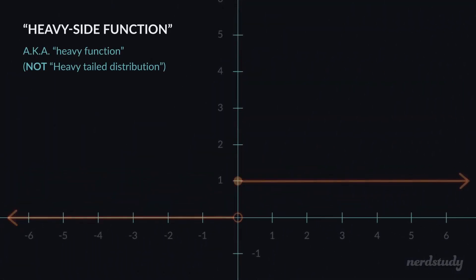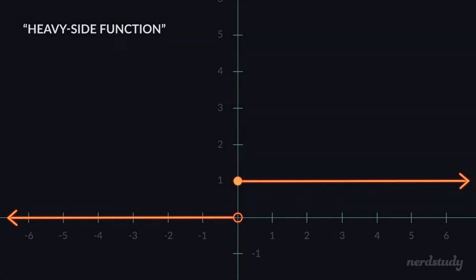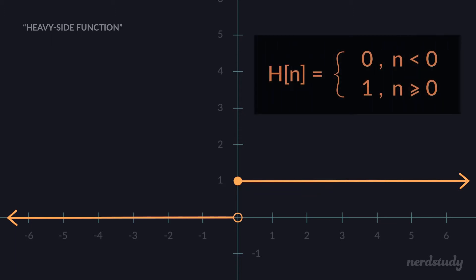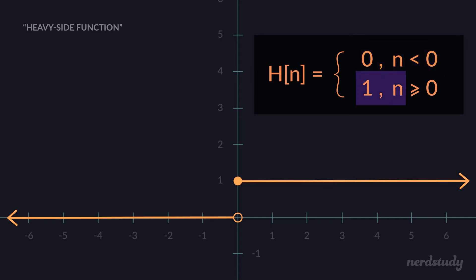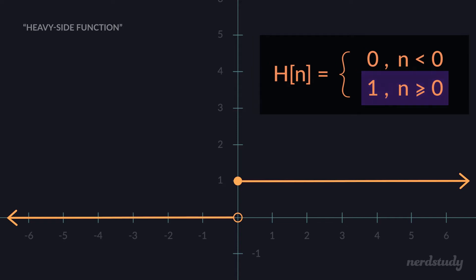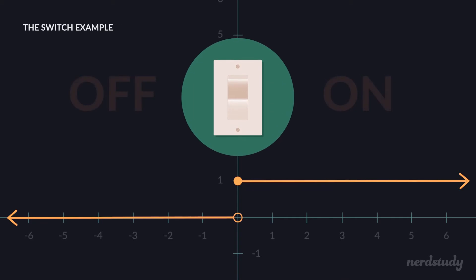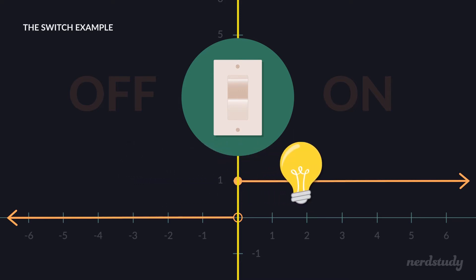The Heaviside function looks like this. What's interesting about this function is that when the input — in this case we call it n — is less than 0, the y value will be 0. But as soon as n is equal to 0 or greater, as we can see from the graph, the value for y will be equal to 1. A good example of a Heaviside function would be a switch, where x = 0 represents a light going from off to on — 0 to 1 so to speak.